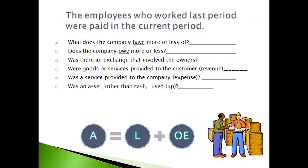Let's look at another transaction. Employees who worked last period were paid in the current period. Answer the questions for the current period only. The company has less cash because the employees were paid. The company owes less because the obligation or liability from the last period is now paid. There was no direct exchange with owners, and goods and services were not provided or received this period, and an asset other than cash was not used up. Cash and wages payable will be lower on the balance sheet.